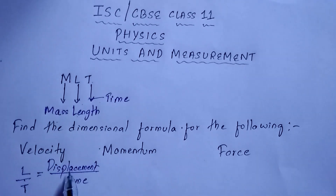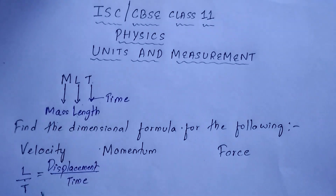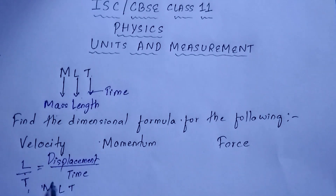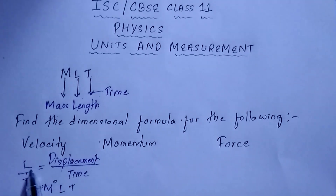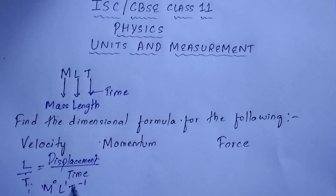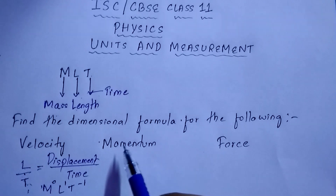Displacement is measured in meters, so we write L. Time is T. There is no M, that is no mass, so M will be zero. The dimensional formula for velocity is M⁰L¹T⁻¹ — M is zero because there is no mass, L is one, and time goes to the numerator as T⁻¹ because it is L divided by T.